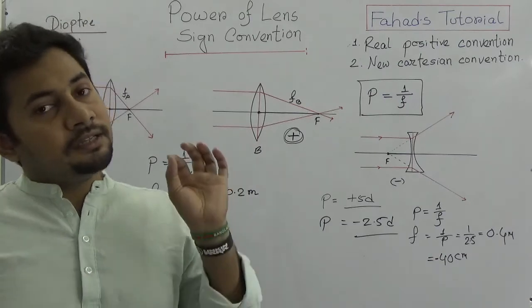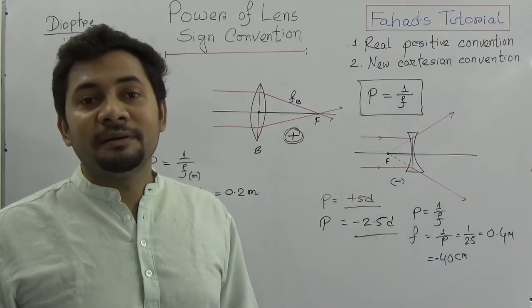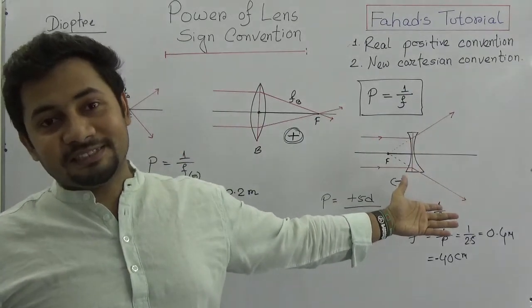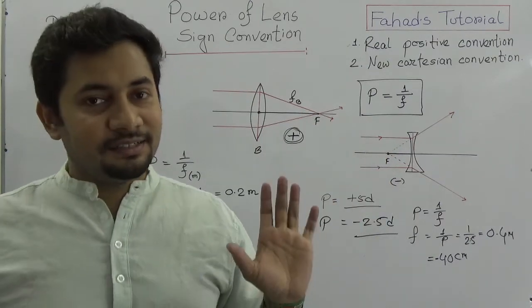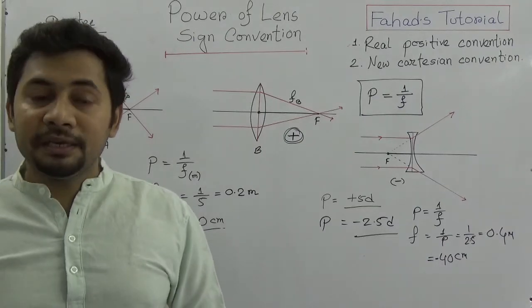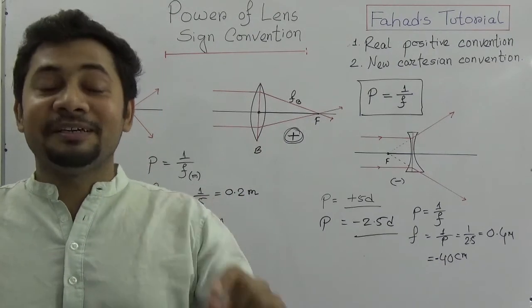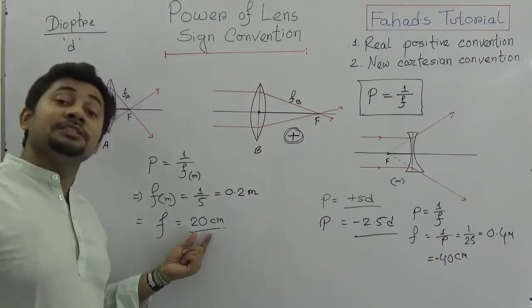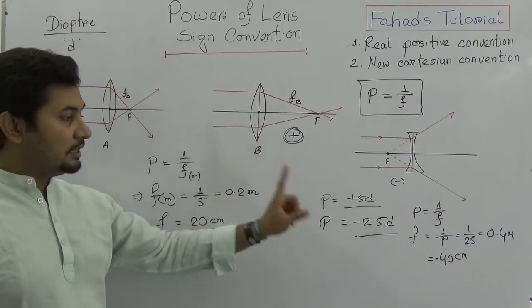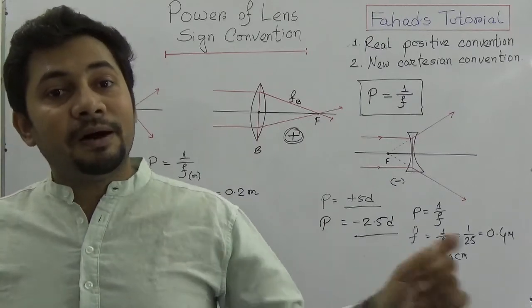When you see a positive sign given, this is a convex lens. When you see a negative sign given, this is a concave lens — because it is a virtual distance. All virtual distances are negative. The formula P equals 1 over F is very simple, but remember that F must be in meters, though you can express it in centimeters by multiplying by 100. Positive for convex, negative for concave. Shorter focal length means greater power.